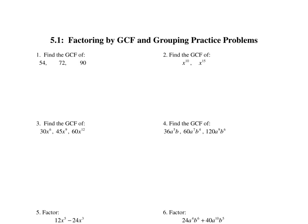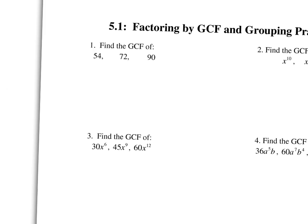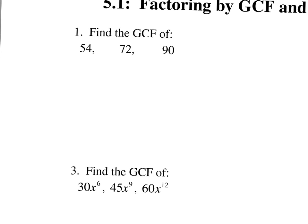We're going to do some practice for Section 5.1, factoring out the GCF and factoring by grouping. First, just some practice on finding the GCF, because you can't factor out the GCF if you can't find it. To find the GCF, remember we're going to use the tree to get prime factors. You can practice the tree off here by yourself if you need to.